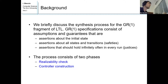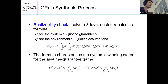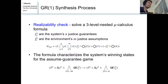The synthesis process consists of two phases: realizability check and controller construction. Realizability check is actually solving a three-level nested mu calculus formula, which you can see in the middle. There are n justice guarantees of the system, indexed by J, and n justice assumptions. This formula characterizes the system's winning states for the assume-guarantee game. Intuitively, it means: as long as the environment satisfies its assumptions, the system is guaranteed to satisfy its guarantees.